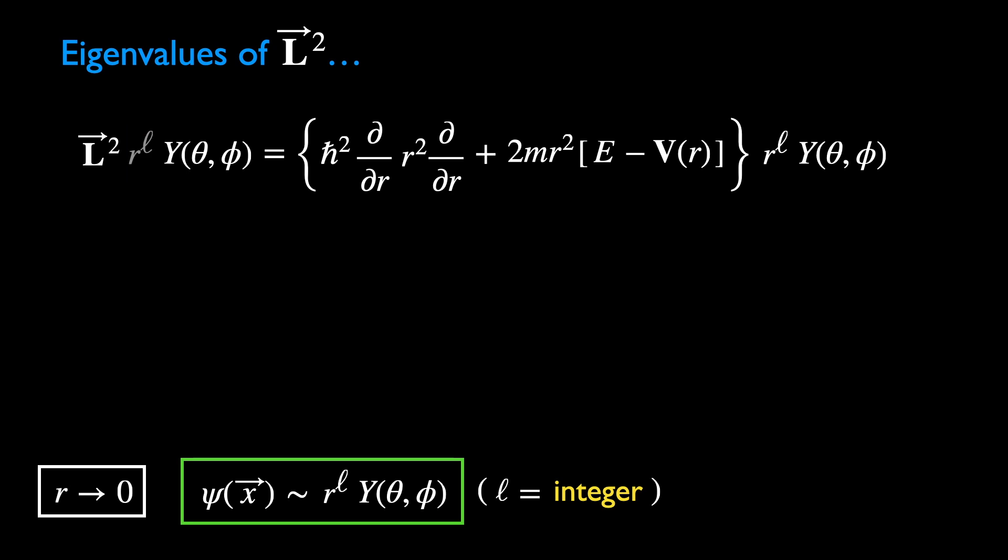We can move r to the power of l behind the operator L-square. Because L-square is only dependent on the angular variables and acts just on the function Y. On the other hand, on the right-hand side, the operator in the blue box does not act on Y but just on r to the power of l.